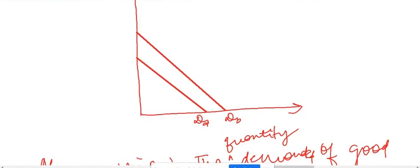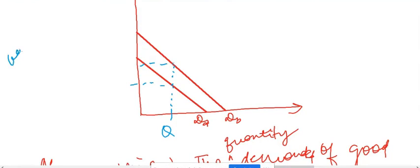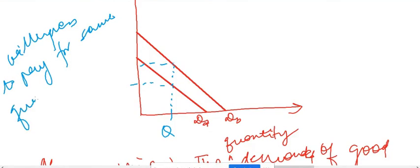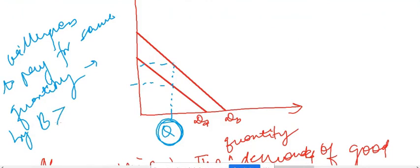So if I take any price, whatever B demands is more than whatever A demands. Alternatively, at any quantity, the willingness to pay by A is less than the willingness to pay by B. A wants to pay less for the same commodity and B wants to pay more for the same quantity.